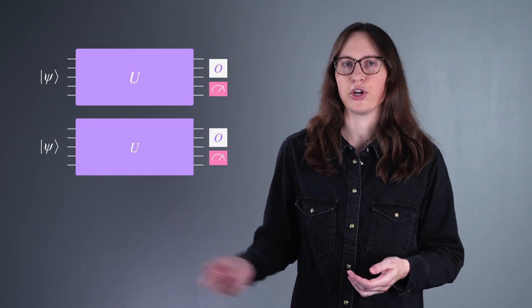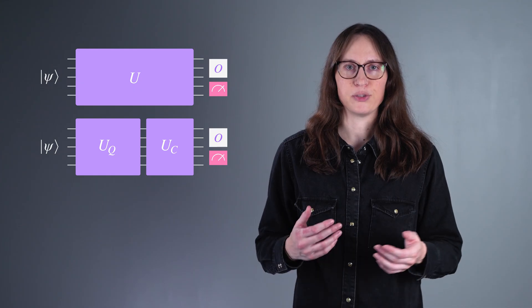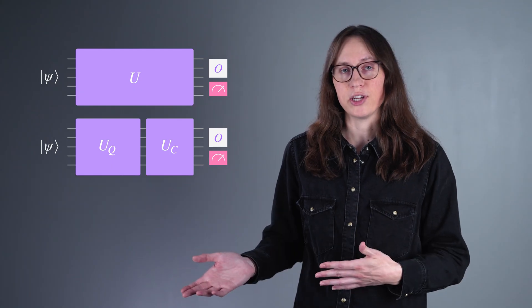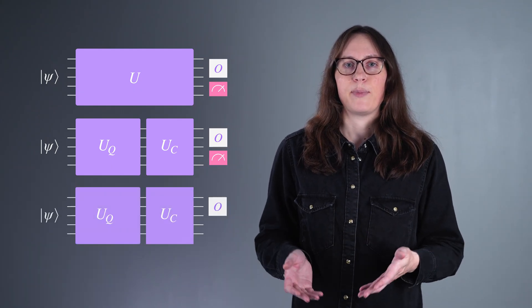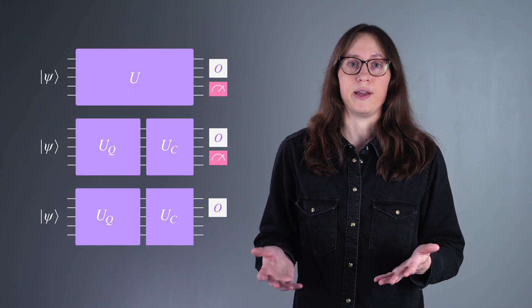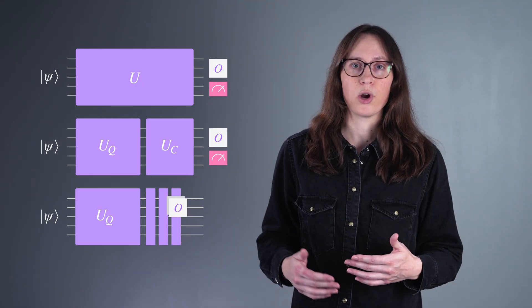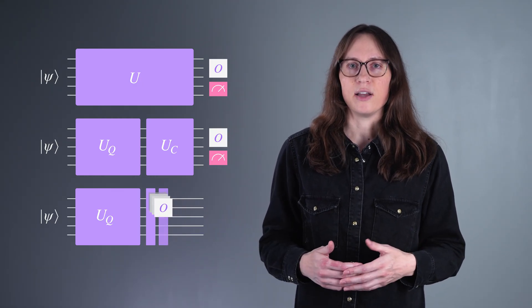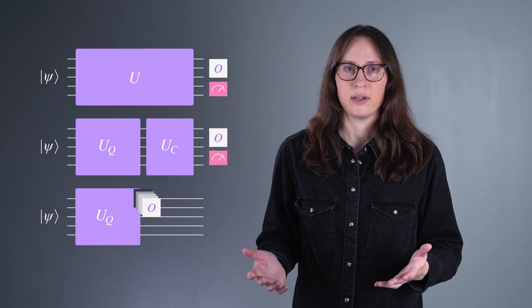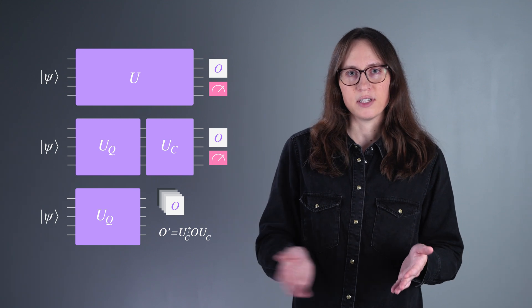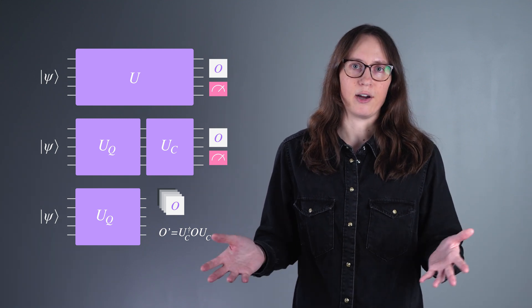The idea is pretty simple. We start by dividing our circuit into two portions. The first portion, U sub Q, is what we intend to run on quantum hardware. The second portion, U sub C, we'll eliminate by classically backpropagating our observable through it. As we backpropagate the observable, circuit instructions are absorbed into the observable one at a time, causing the number of terms in the observable to grow as the circuit U sub C shrinks. In other words, we're trimming off the tail of the circuit, but our observable is getting bigger. In general, the number of terms added to the observable can double each time a non-Clifford gate is encountered.